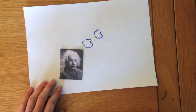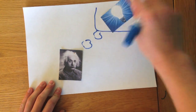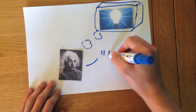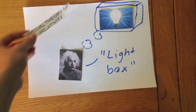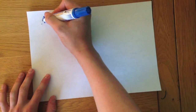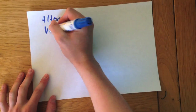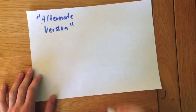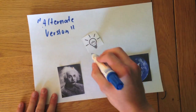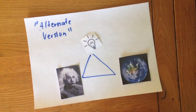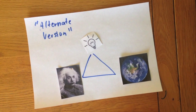Einstein devised an experiment known as the Lightbox, and he used the findings to show his Special Theory of Relativity. We are going to make an alternate version of Einstein's Lightbox and demonstrate one of the most famous ideas of the 20th century.